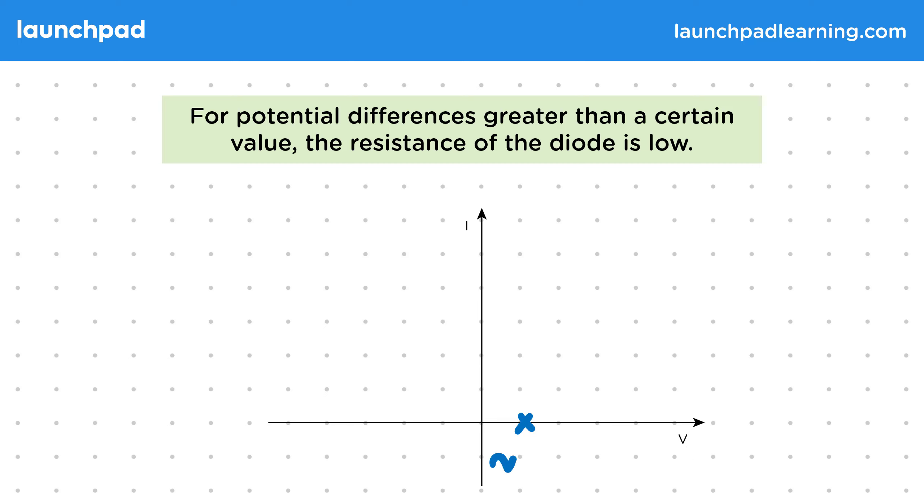Normally the threshold potential difference is about 0.7 volts, but this will depend on the temperature of the diode and the material used to make it. You don't need to recall this value though. Then for potential differences above this PD, the graph looks something like this.